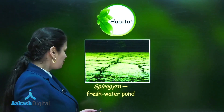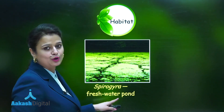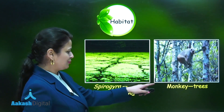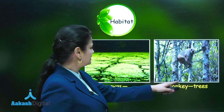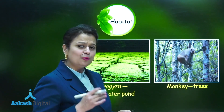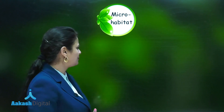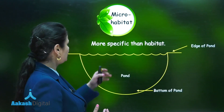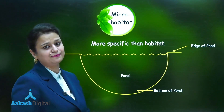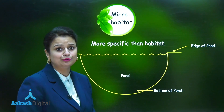For example, Spirogyra's habitat is a freshwater pond, and for a monkey the habitat is trees. Now what is microhabitat? When we say microhabitat, it means we are becoming more specific.